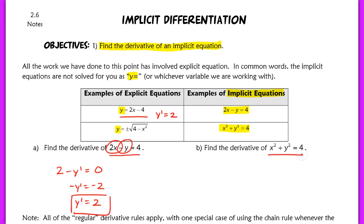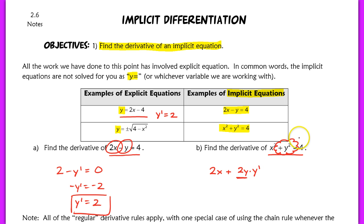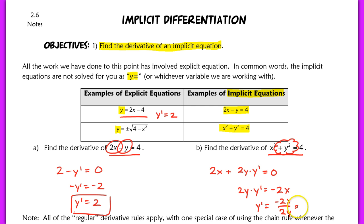Our next example does a better job of highlighting that implicit differentiation is simply an application of the chain rule. When we find the derivative of x squared plus y squared equals 4 with respect to x, the derivative of x squared is 2x. For y squared, y is really a function of x, so we treat it as a composite function and apply the chain rule — the derivative of y squared is 2y multiplied by y prime. Setting that equal to 0, we isolate y prime: 2y times y prime equals negative 2x, so y prime equals negative x over y. Notice the derivative is now in terms of both x and y.